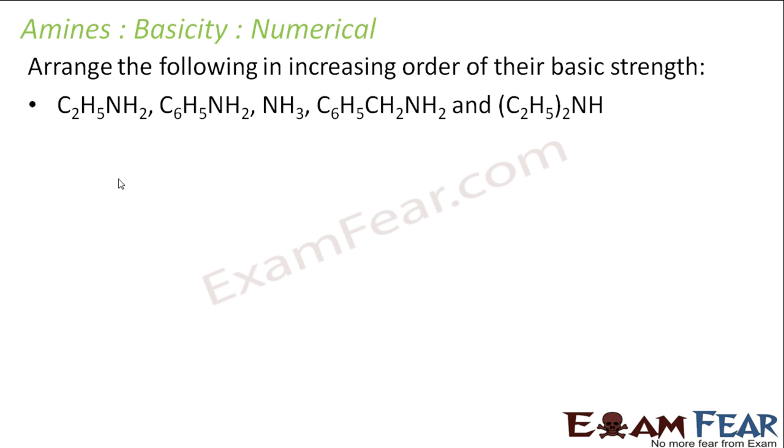Again, we have to arrange. So we have C2H5NH2, C6H5NH2, C6H5CH2NH2, and C6H5. See, least is this. This we already know. This is least. And the second least is NH3. This is clear. Because others are my alkyl amines. They are stronger than ammonia. And this is my aryl amine. They are weaker than ammonia. This we have seen. So now we have to arrange these.